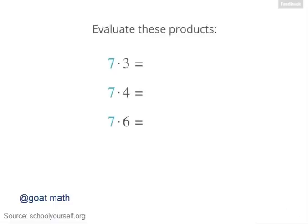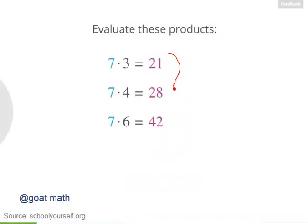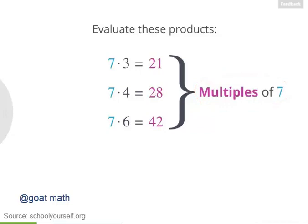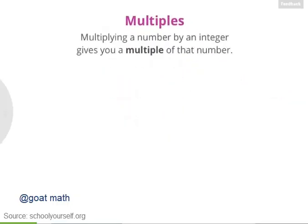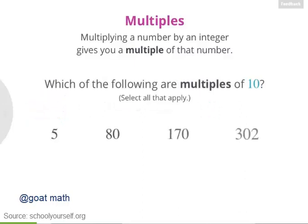Let's start with the number 7 and multiply it by a few different integers. What's 7 times 3, 7 times 4, and 7 times 6? Right, these products are 21, 28, and 42. And these are called multiples of 7. Each of these is equal to 7 times an integer, like 3, 4, and 6. So if you multiply a number by an integer, you get what's called a multiple of that number. For example, 90 is a multiple of 10 because 90 is 10 times 9, and 9 is an integer. But 62 is not a multiple of 10 because 62 does not equal 10 times an integer. So next, can you identify which of these numbers are also multiples of 10?